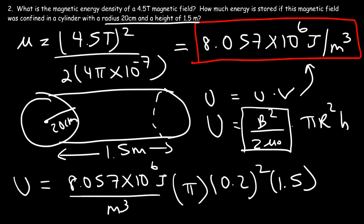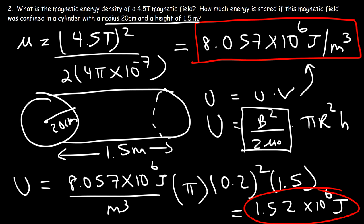Calculating that out, we get 1.52 times 10 to the 6 joules. That is the total potential energy stored in the cylinder due to the magnetic field confined within it.